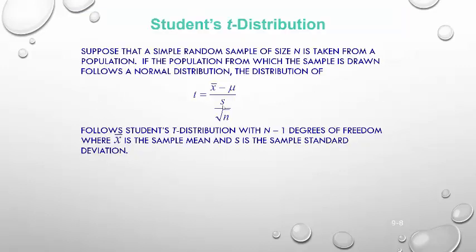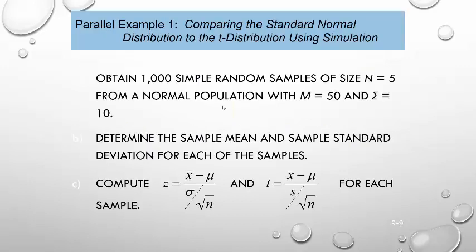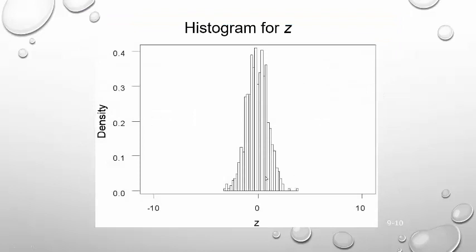To talk about what the t-distribution looks like, suppose we obtain a thousand simple random samples of size n = 5 from a normal population where the average is 50 and the standard deviation is 10. We determine the sample mean and sample standard deviation of each sample, giving us a thousand means and a thousand standard deviations, then compute the z-score and the t-score for each. The z-values use sigma, and the t-values use the sample s we calculated.